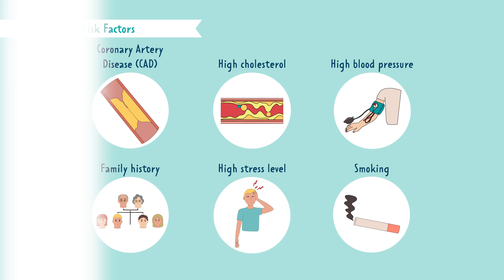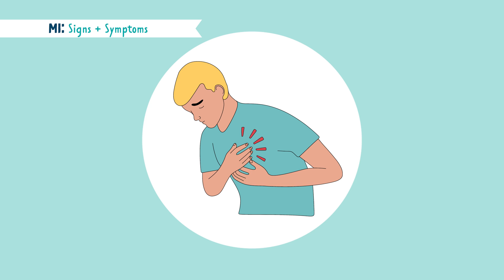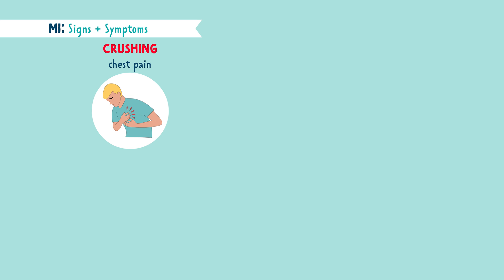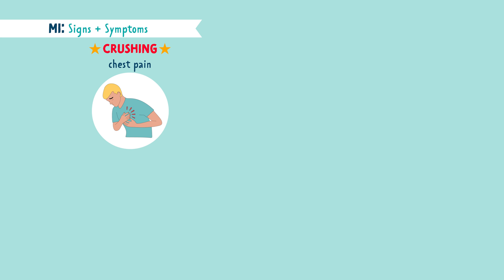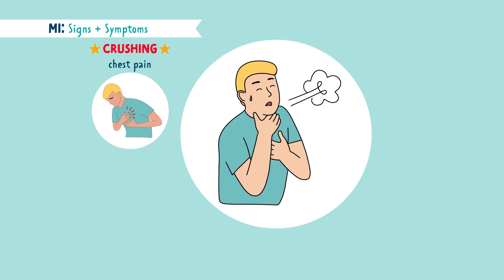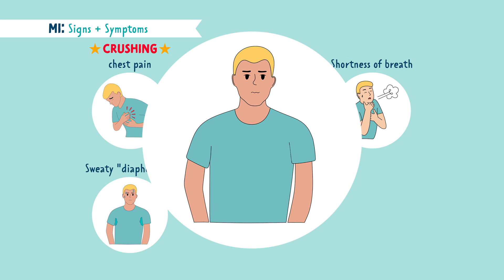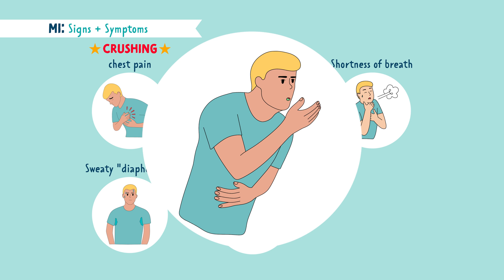Let's talk about some signs and symptoms seen in an MI. Some people complain of crushing chest pain. Some patients might describe this as feeling like an elephant is sitting on their chest. Crushing is a word you definitely want to remember because the NCLEX loves to use that word when talking about an acute MI. Some other signs and symptoms include left arm pain, shortness of breath, sweating — also called diaphoretic — the patient may become pale, and they may even have nausea and vomiting.